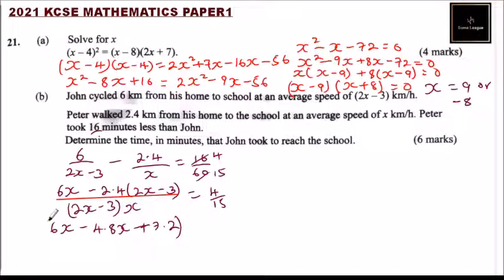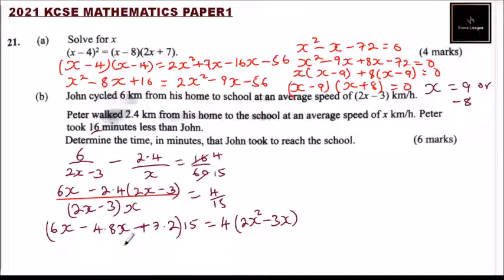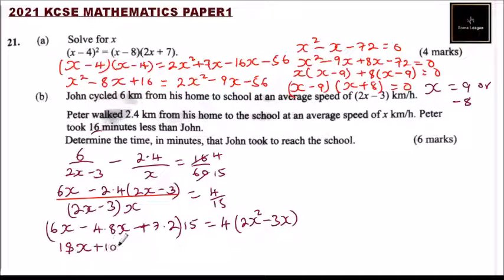Cross-multiplying again and multiplying by 15: 15(1.2x plus 7.2) equals 4 times x(2x minus 3). The left side gives 18x plus 108. The right side, opening the bracket, gives 8x squared minus 12x.